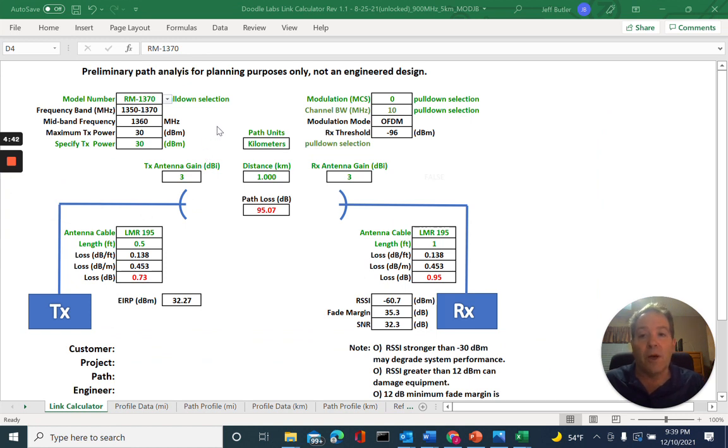To start our Fresnel Zone calculation, we'll start with the link calculation portion of the spreadsheet located at the lower left-hand corner or lower left tab. As we indicated earlier, there are only two variables that we're concerned about for the calculation of the Fresnel Zone. The first variable is the frequency of operation of the signal. In our drop-down menu here, our radio's nomenclature indicates the frequency, and we're going to start with our 915 megahertz radio. The second variable is the link distance between the transmit and receive antennas. In our case, that's 5 kilometers.